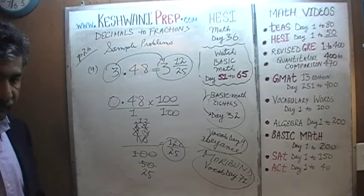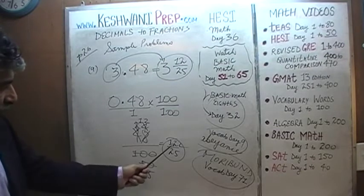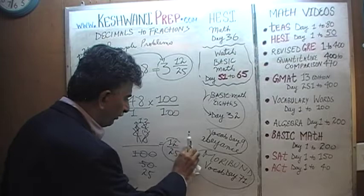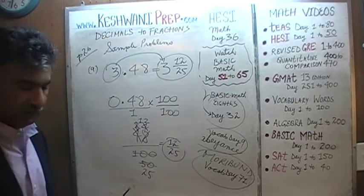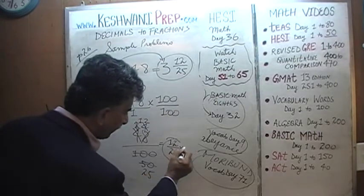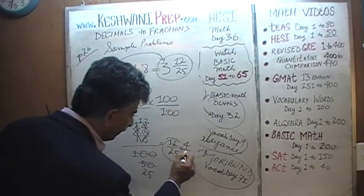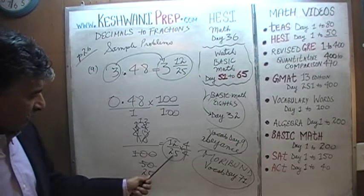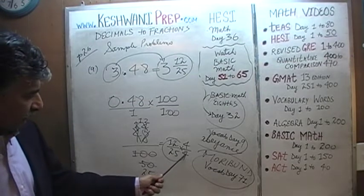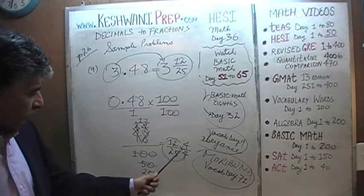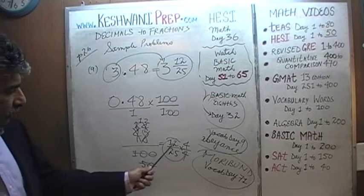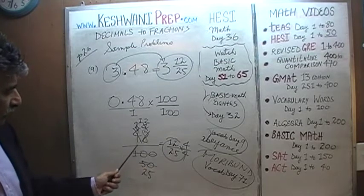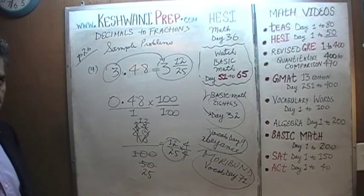12 over 25 makes perfect sense if you think about it: if you were to multiply top and bottom by 4, the bottom becomes 25 times 4 equals 100, and the top becomes 12 times 4 equals 48 — and of course 48 divided by 100 is 0.48.